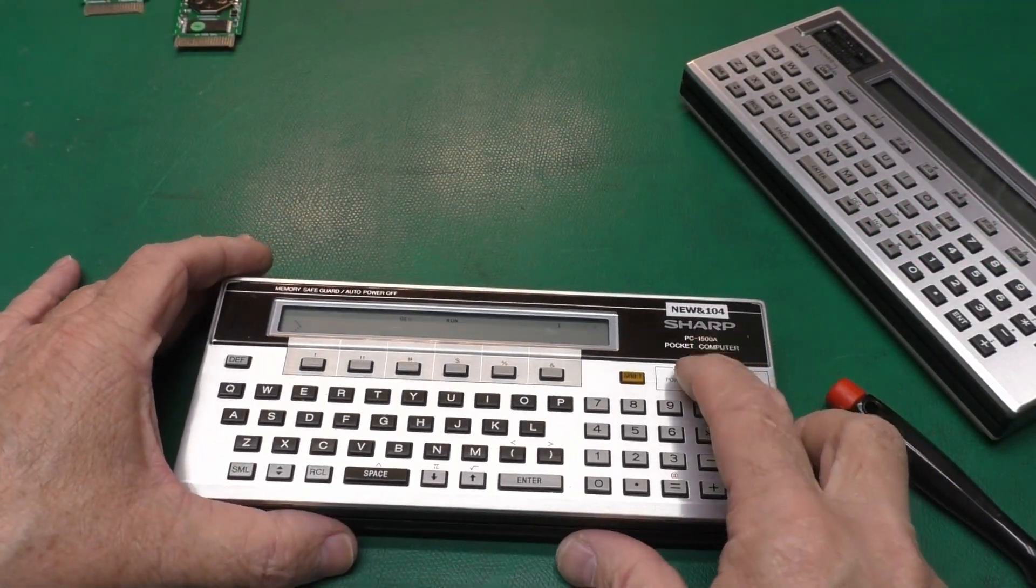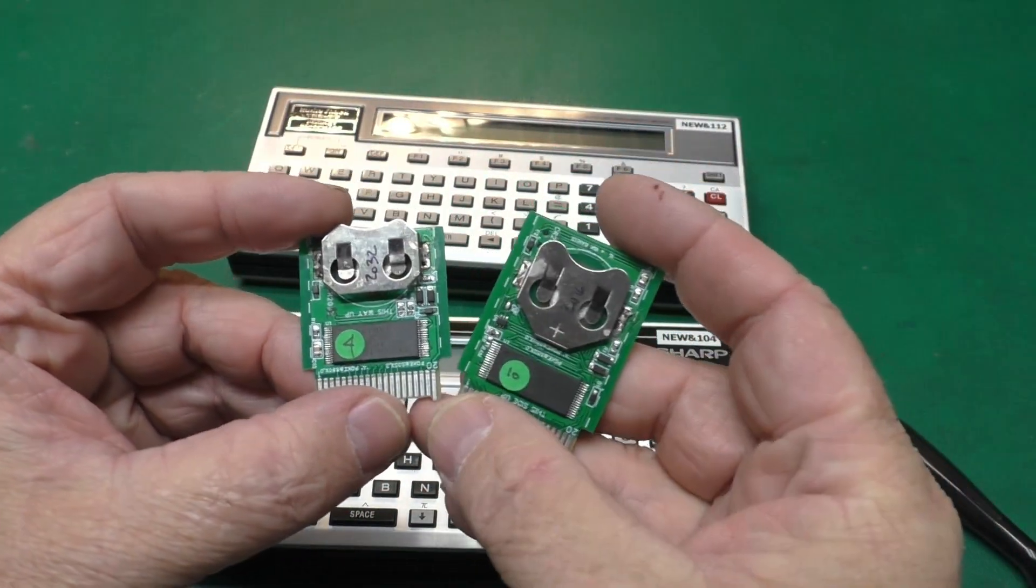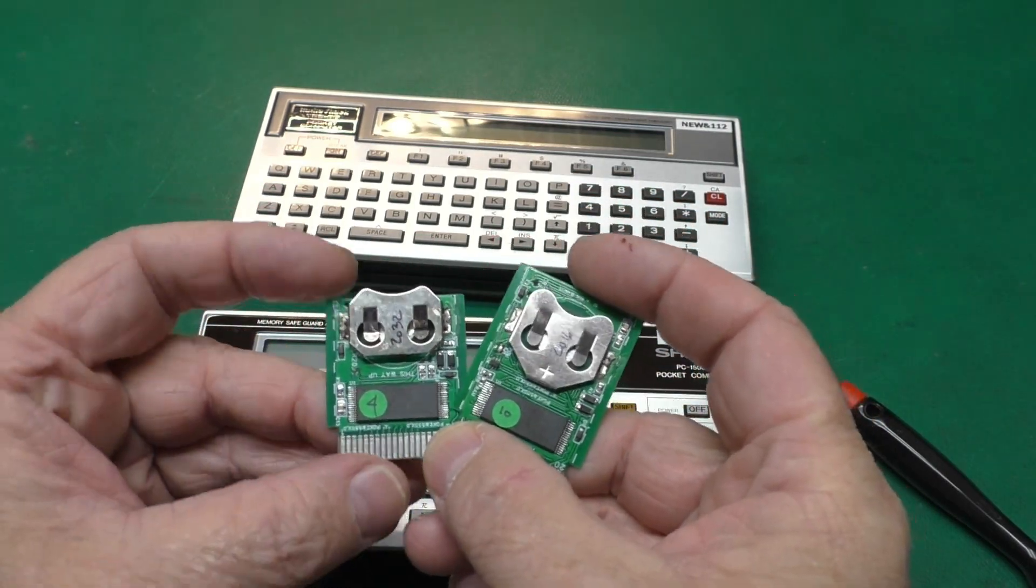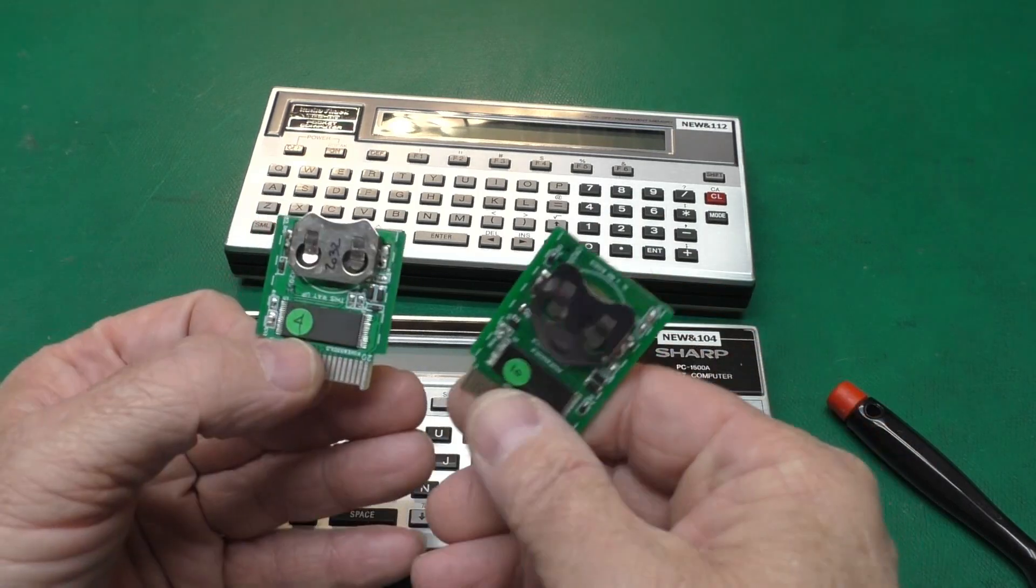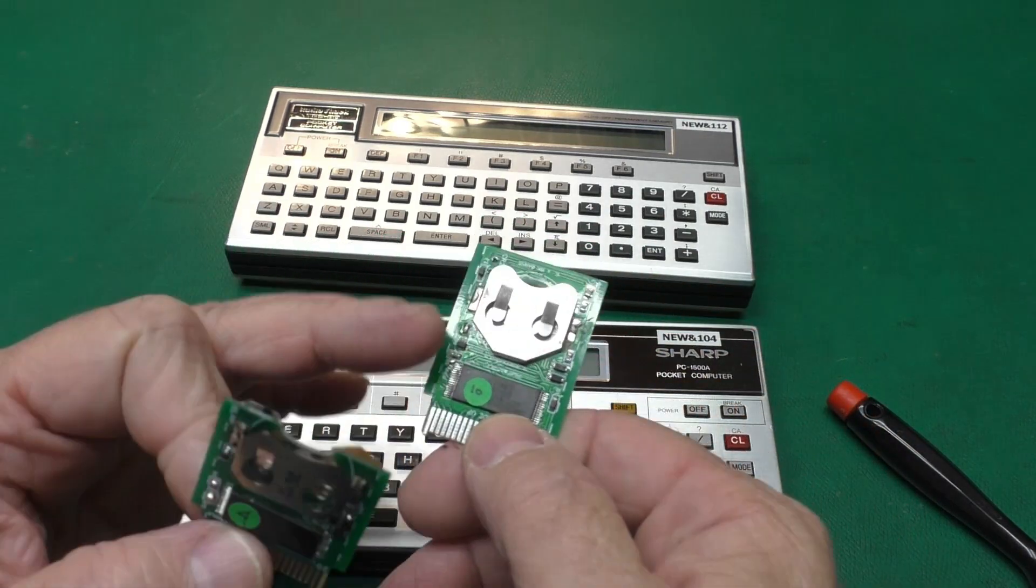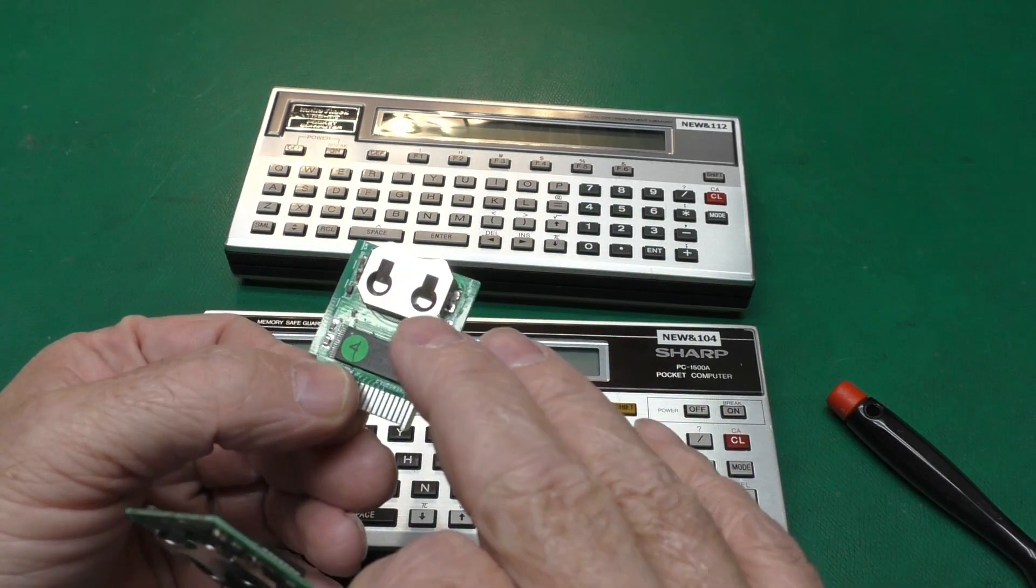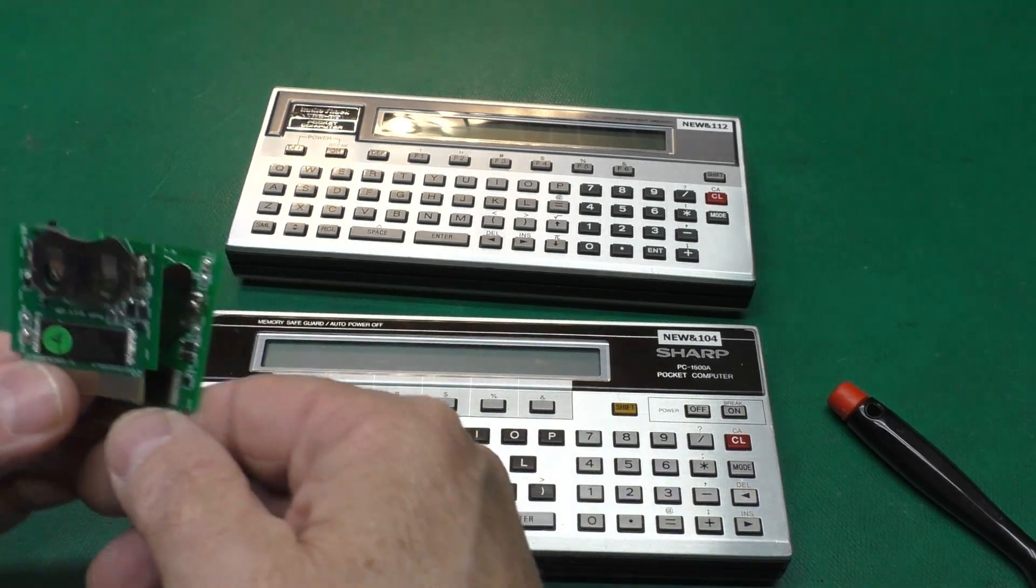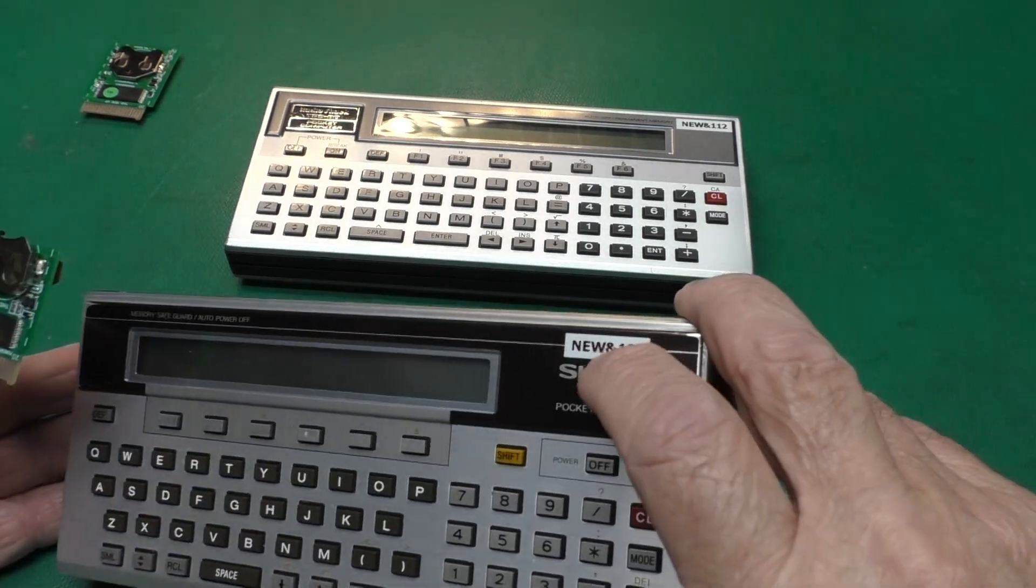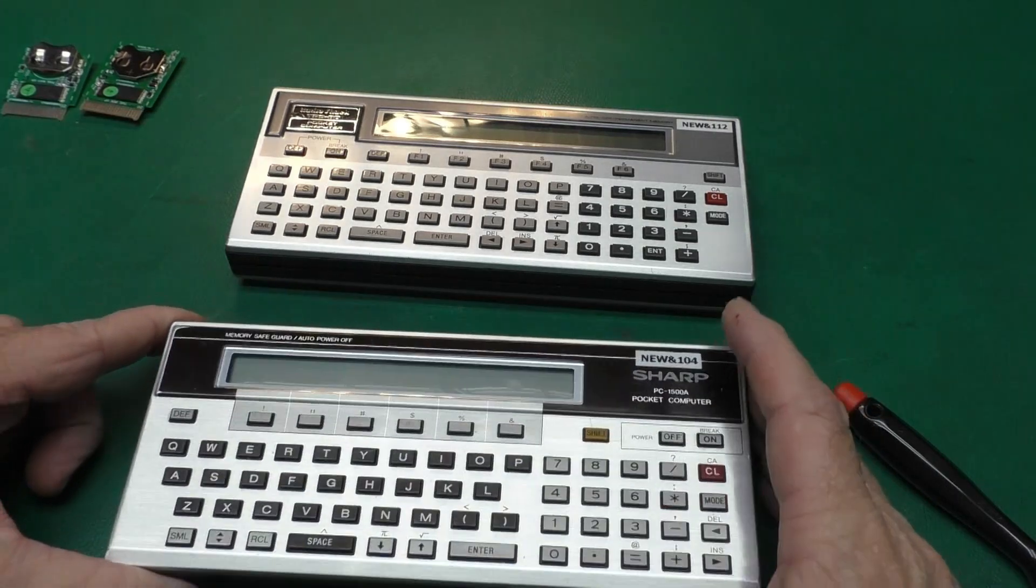So by the time you see this video, both of these guys will be up on the website and I've got a small number of each right now and when we see what the demand is we will build some more. The RAM and Flash takes a CR 2016 that's included. The RAM only takes a CR 2032 that is also included. And I will include a sticker for each one so you can stick on your computer if you should choose to do that.